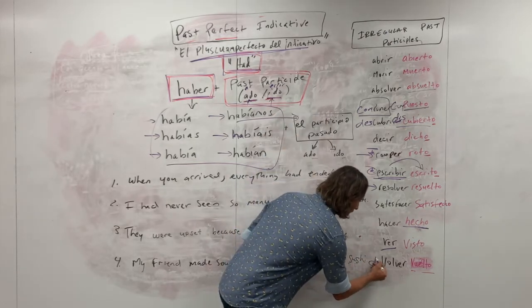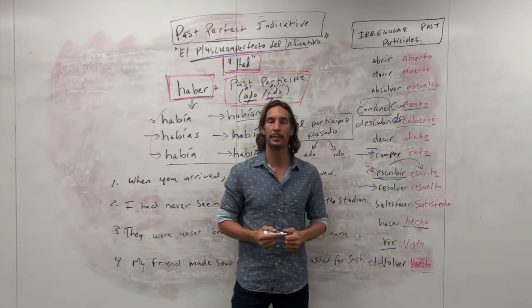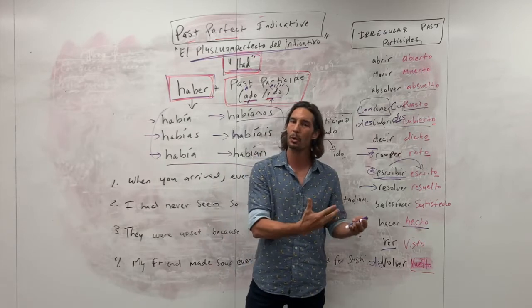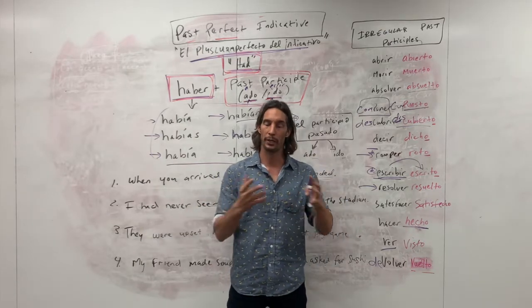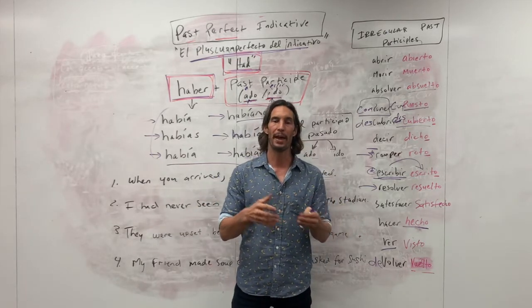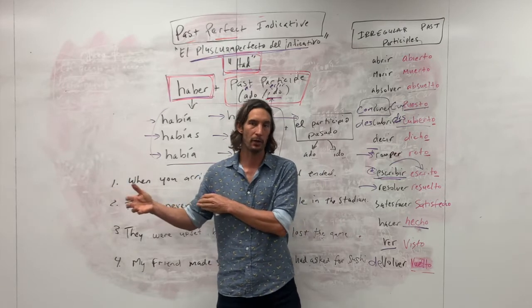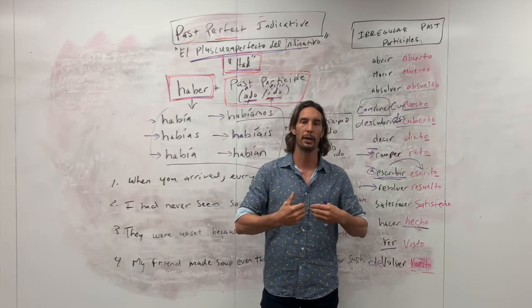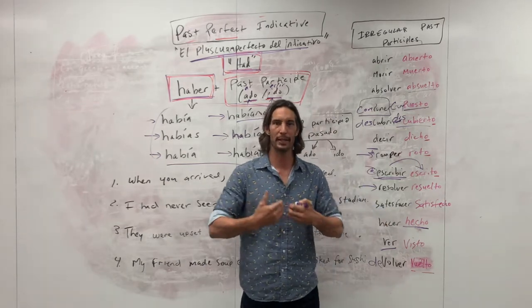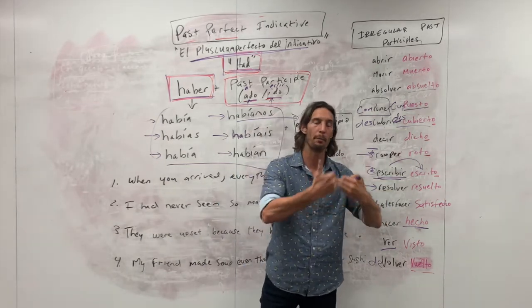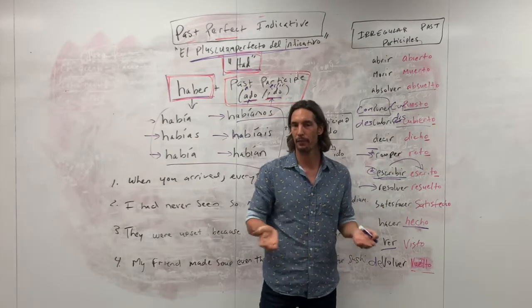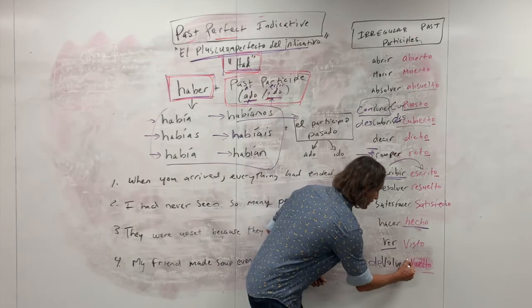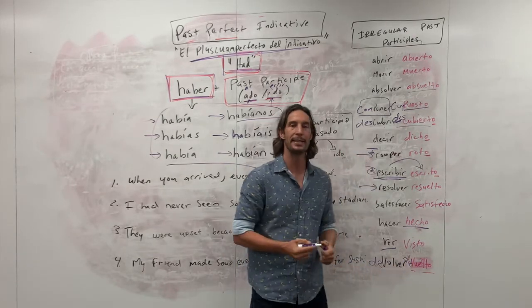Now, another fun one is devolver. So, while volver really refers to, like, a person, or say, an animal, or something like that returning, like volver a casa, to return to the house. Devolver is returning, or referring to, say, returning an item. Like, you bought something, you didn't like it, you're returning. You can devolver una camiseta, for example. Right? And so, all that to say, if you were to use that as a past participle, it would be devuelto.